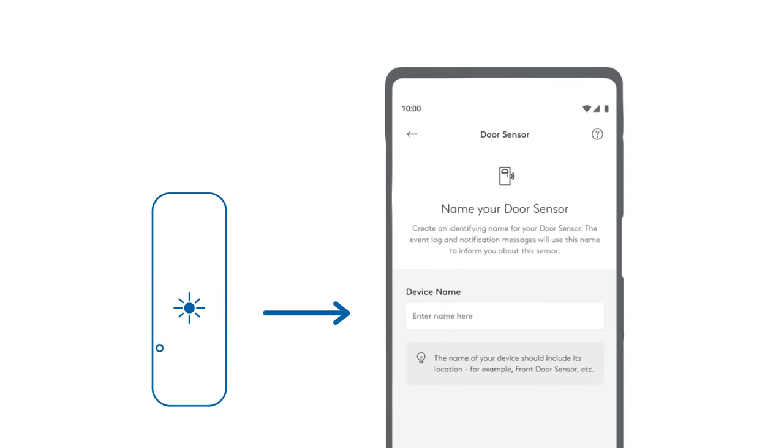Next, use your ADT Plus app to name your sensor. Pro tip, name it after the location you plan on mounting it.